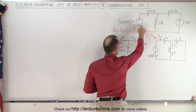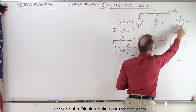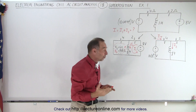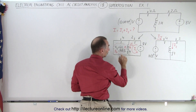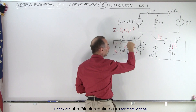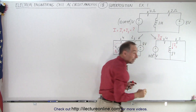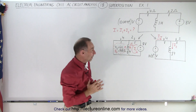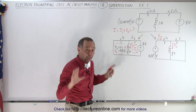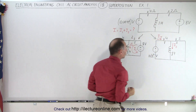We're going to eliminate this voltage source and draw the circuit without it, and then we're going to eliminate this voltage source and draw a circuit without it. Notice in each case we only have one source — this source in this circuit, and this source in this circuit. We superimpose one on the other to get the original circuit.